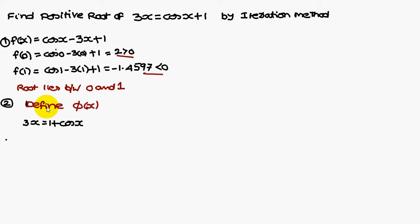Now, we have to define a new function phi of x. For that, take 3x equals cos x plus 1. From that, extract x: x equals 1 plus cos x by 3. This function you can consider as phi of x equals 1 plus cos x by 3.